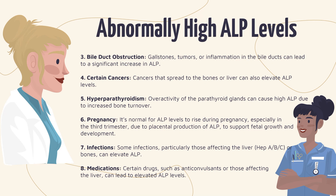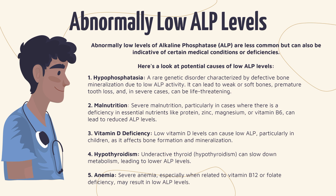Now let's take a closer look at what causes abnormally low ALP levels. Abnormally low levels of alkaline phosphatase are less common but can be indicative of certain medical conditions or deficiencies. At number one we have hypophosphatasia — a rare genetic disorder characterized by defective bone mineralization due to low ALP activity, which can lead to weak or soft bones, premature tooth loss, and in severe cases can be life-threatening. At number two we have malnutrition — severe malnutrition, particularly deficiencies in essential nutrients like protein, zinc, magnesium, or vitamin B6, can also lead to reduced ALP levels.